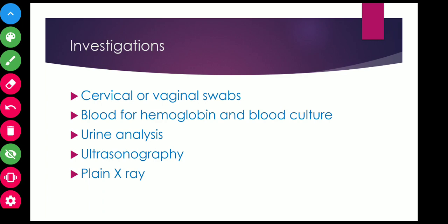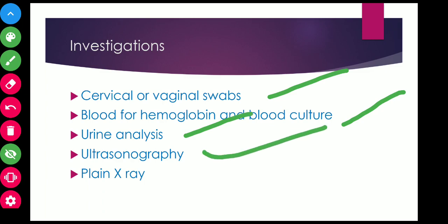For investigations, since this is associated with infection, we first collect cervical or vaginal swabs, blood for hemoglobin and blood culture to identify the growth of microorganisms, and urine analysis including urine culture. Ultrasonography of the pelvis and abdomen is done to detect intrauterine retained products of conception. Plain X-ray is used in suspected cases only, such as suspected bowel injury.